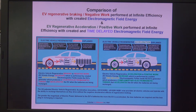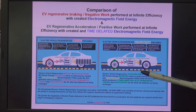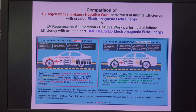The main difference from existing electric mobility applications is the need for massive amounts of batteries for suitable driving range, whereas the regenerative acceleration EV only requires enough batteries to get up to cruising speed. At cruising speed, the regenerative acceleration generator takes over and provides kinetic energy increase — acceleration — with simultaneous battery recharging. The more power that's sent to the batteries, the more the EV is accelerated.